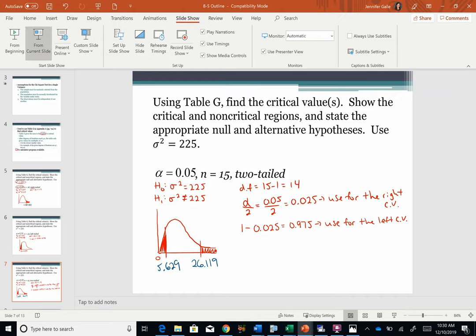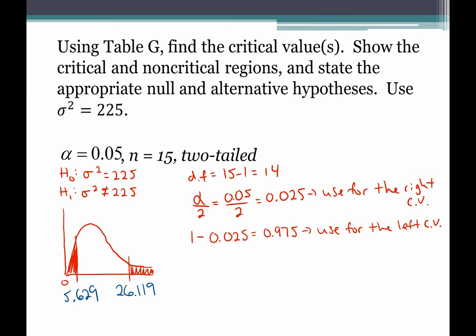So three different situations for critical values depending on whether you're left, right, or two-tailed. For the other distributions, all we really had to remember was divide alpha by two for two-tailed; otherwise everything was used as-is. For chi-square, be careful — there's no calculator shortcut; no inverse chi-square function on your calculator. These will take some practice.